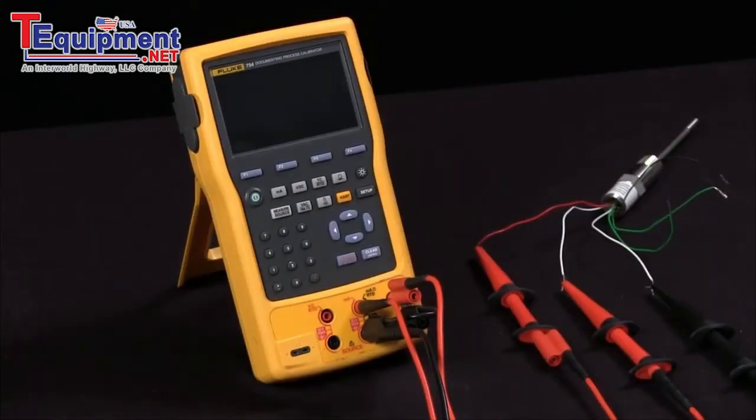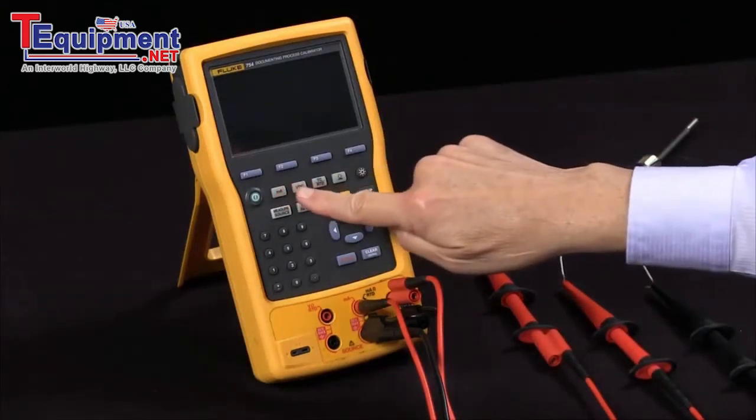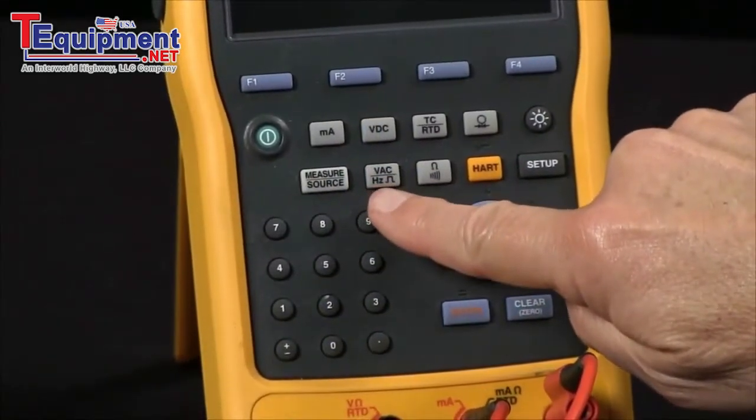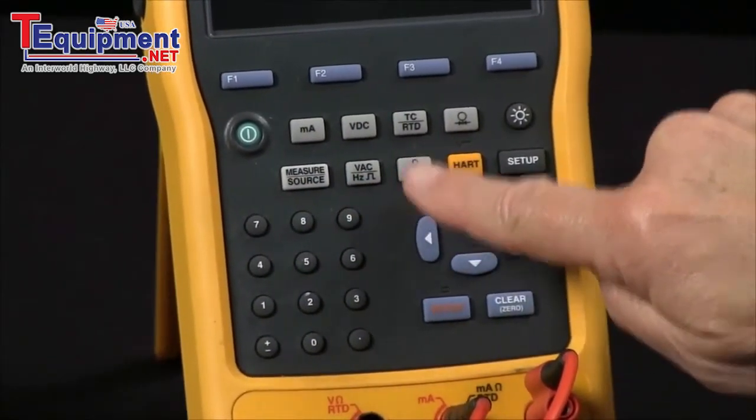The Fluke 754 documenting process calibrator can source and measure a wide variety of parameters: milliamps, DC volts, thermocouples, RTDs, pressure, volts, frequency, ohms, and continuity.